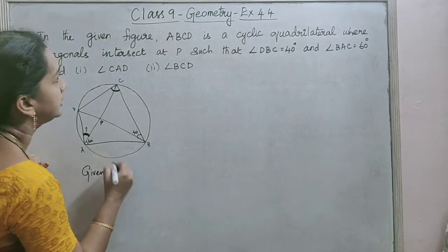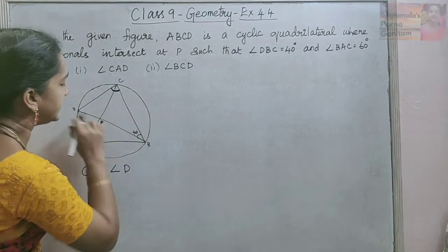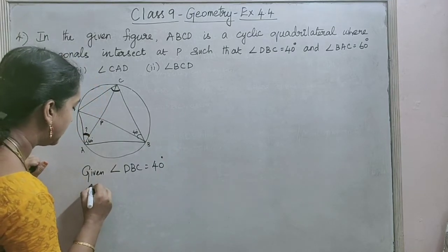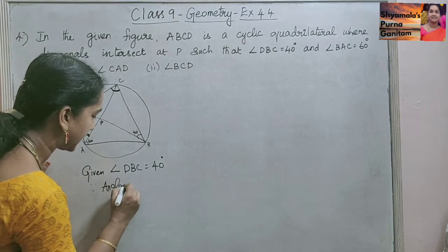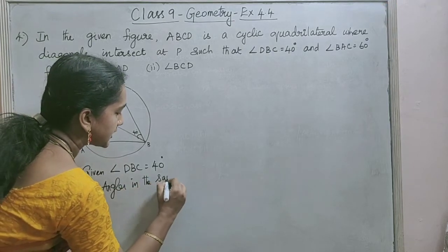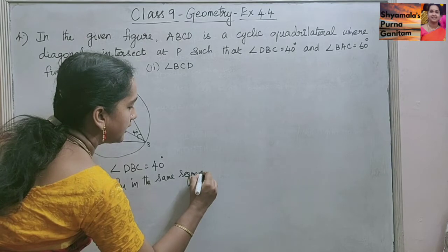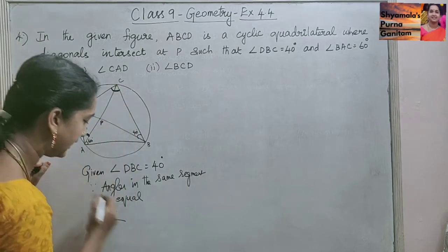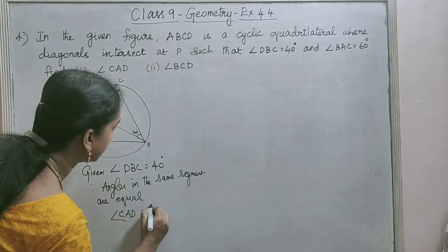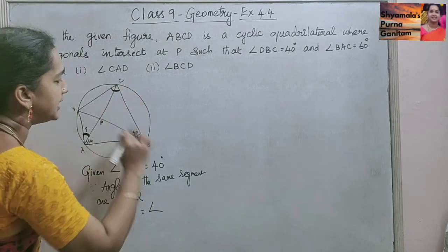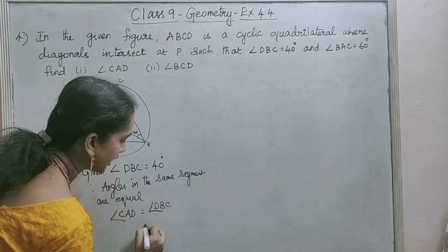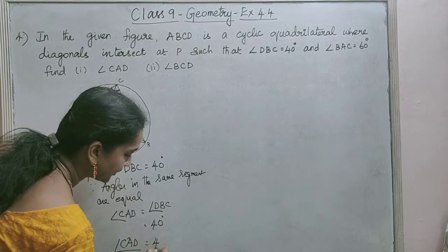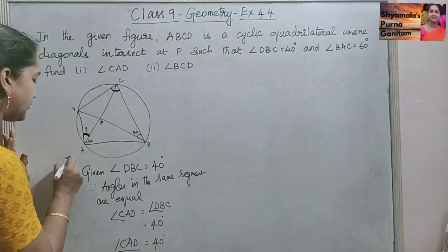Given angle DBC is equal to 40 degrees. Since angles in the same segment are equal, angle CAD is equal to angle DBC. Angle DBC is given as 40 degrees, so angle CAD is also equal to 40 degrees. This is the answer for the first part.